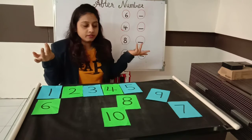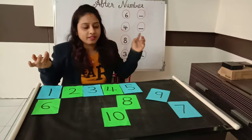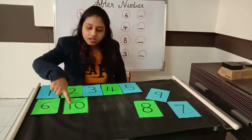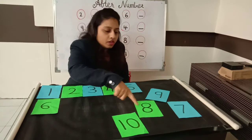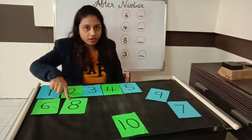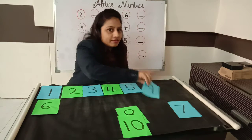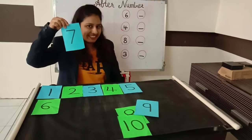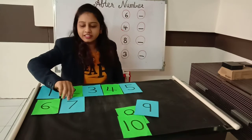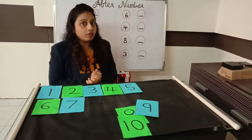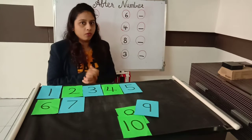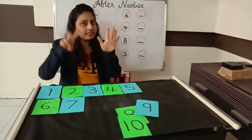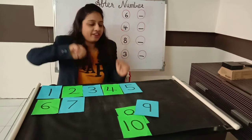What comes after 6? 7 number. Where is number 7? Is this number 7? No. Can I put it here? No. Is this number 7? No. Is this number 7? Yes. Very good. 6 after 7? No. So what comes after 7? Let's count: 1, 2, 3, 4, 5, 6, 7, and then 8. Very good.